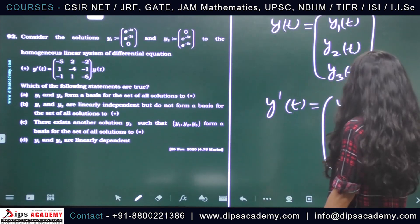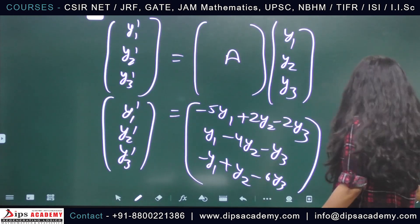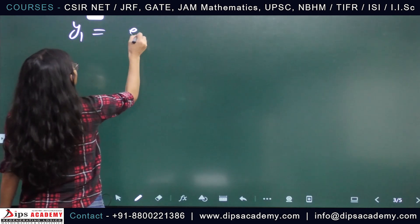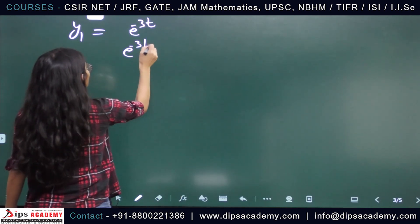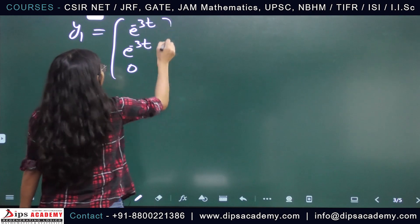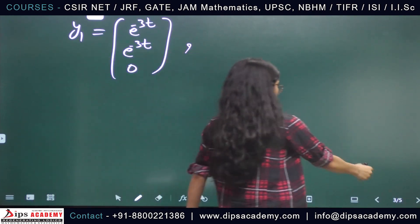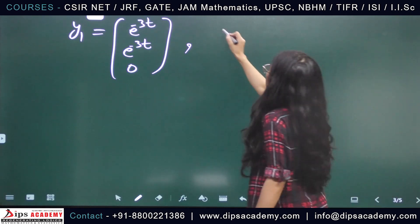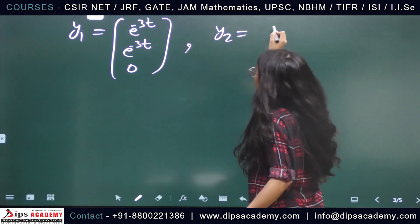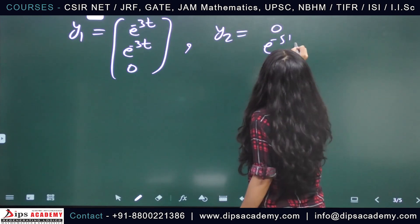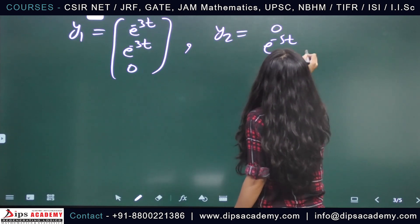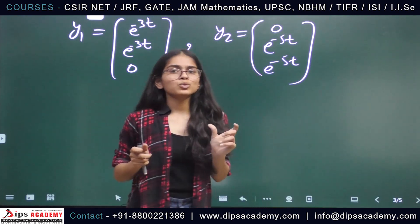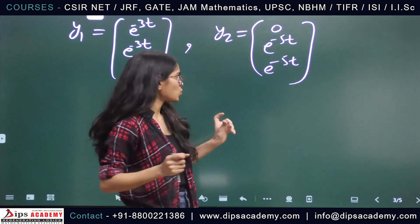We are given two particular solutions: y1(t) = (e^{-3t}, e^{-3t}, 0)^T and y2(t) = (0, e^{-5t}, e^{-5t})^T.